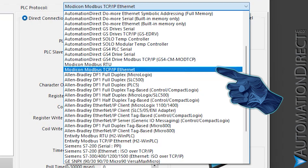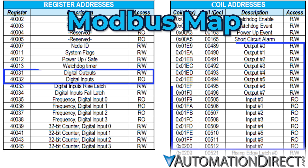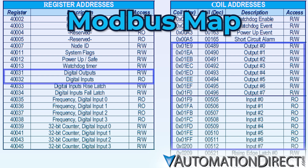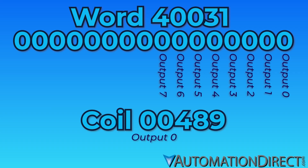Not to worry — in cases like this, we'll pick a more generic Modbus driver. We're using Modbus TCP, so we'll use the Modicon Modbus TCP/IP Ethernet selection. First, we'll set up our tags with the help of the Modbus map mentioned earlier. The I/O points are available as either coils or single words — that is, the coils packed into a word. For example, bit 0 of word 40031 represents output 0, just as does coil 00489.